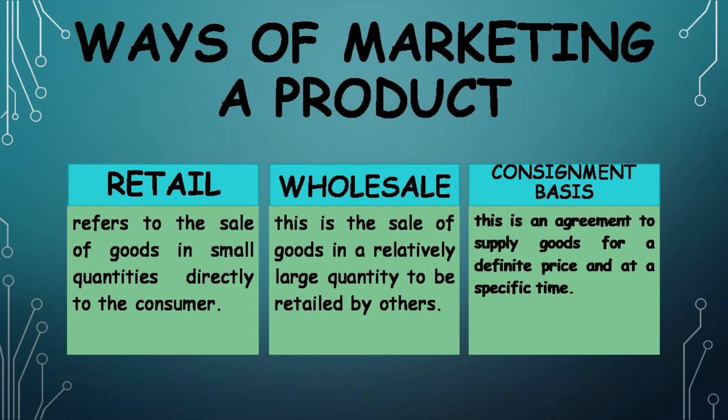Ways of Marketing a Product. Retail refers to the sale of goods in small quantities directly to the customer. Wholesale is the sale of goods in a relatively large quantity to be retailed by others. Consignment is an agreement to supply goods for a definite price and a specific time.